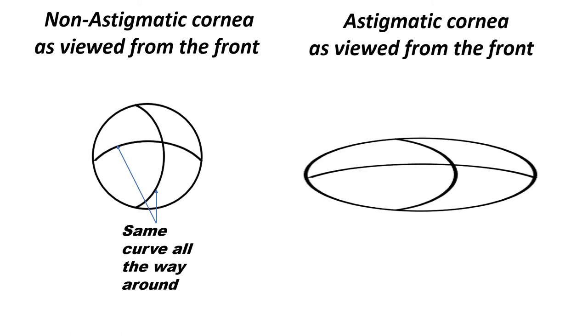But in an eye that does have astigmatism, the cornea is more oval or rugby ball shaped, as shown here. There is a steeper part, which in this example goes from top to bottom, and a flatter part, which in this case goes from side to side.